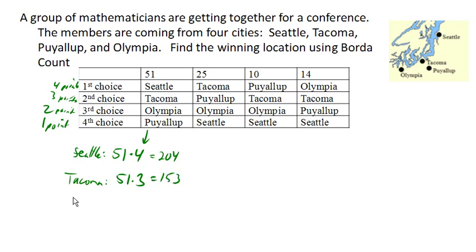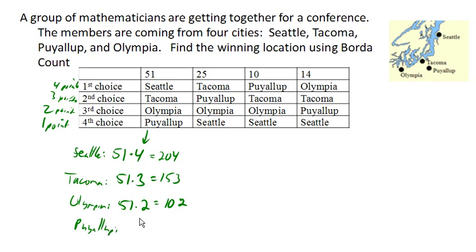Olympia earns 2 points from those 51 votes, giving 102 points. And Puyallup earns 1 point each, giving 51 points. So those are the points earned from these 51 voters.